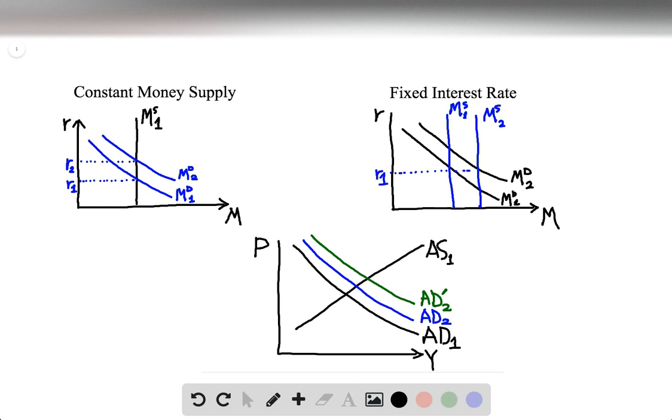So in fact, the aggregate demand curve, AD1, will shift not all the way up to AD2 prime, but only up to AD2, the blue line.